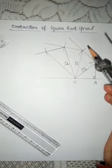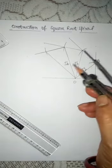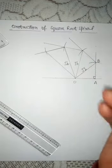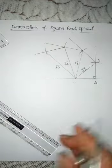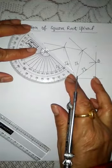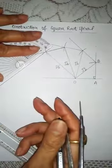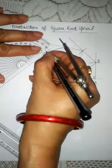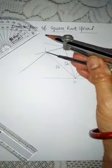Today we are going to construct the square root spiral, children, up to root 17. I have already told you in my previous videos. To make the spiral, we will continue making a 90 degree angle, join it, and cut 1 inch.